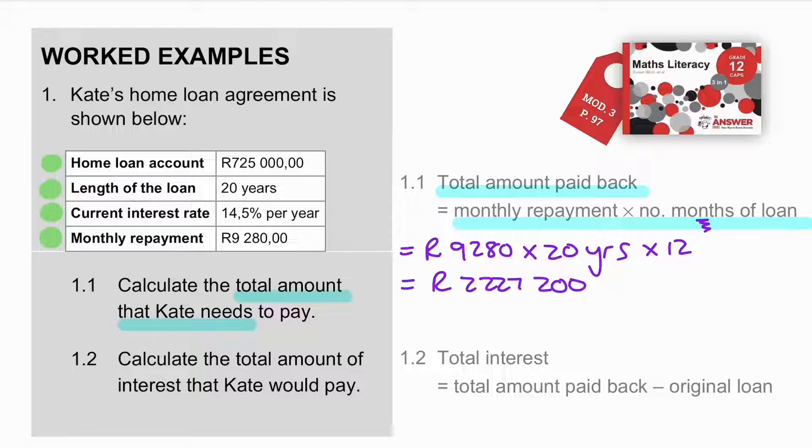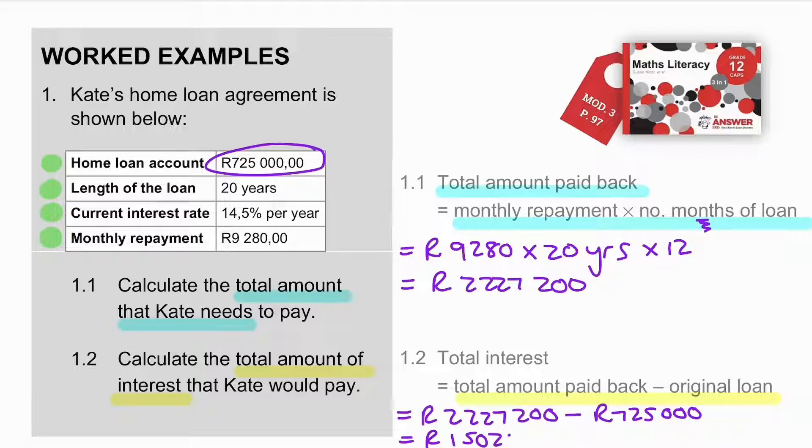Next question, we now need to calculate the total amount of interest that Kate would pay. Since we know that interest is the total amount paid back minus the original loan value, we can calculate. We have just calculated the total amount minus the original value of the loan which is given. And, that leaves us with the interest value that she owes. And, look at that, over 1.5 million rand paid purely in interest. So, it's expensive.